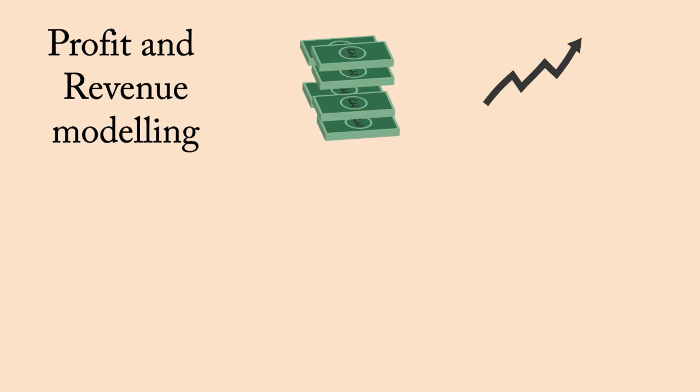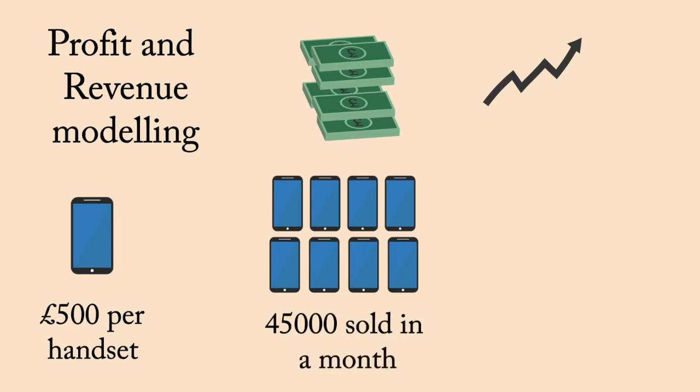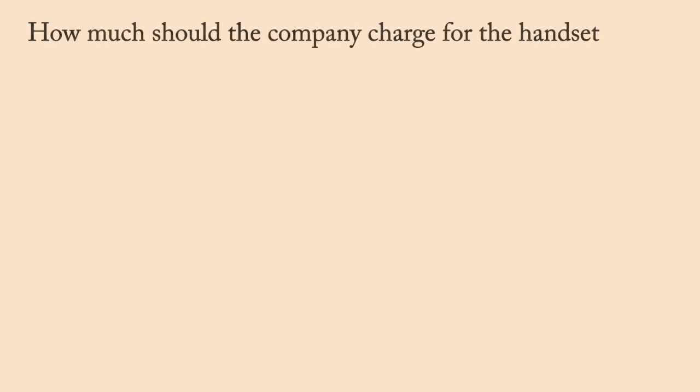Let us try to explore this aspect of quadratic equations using a simple sample problem. Suppose the cost of a popular mobile phone handset is £500 and 45,000 of them are sold a month. The sales team of the company did some research and concluded that for each £20 decrease in price, the company can sell 5,000 more handsets per month.